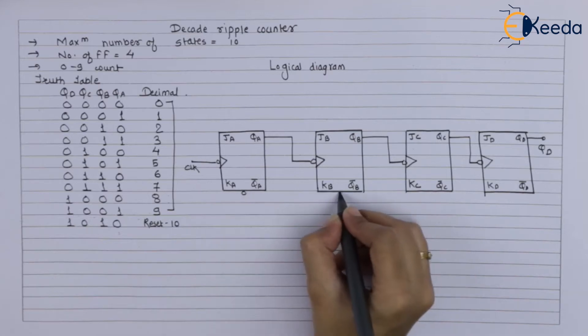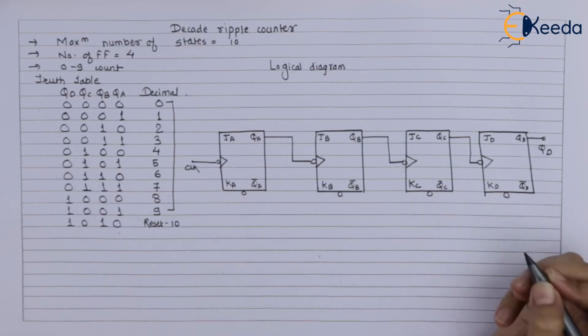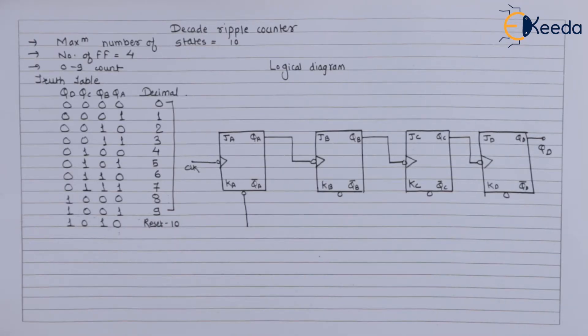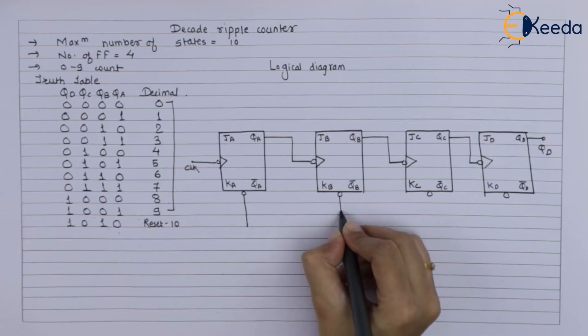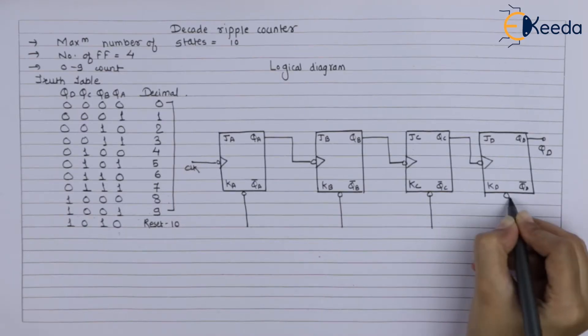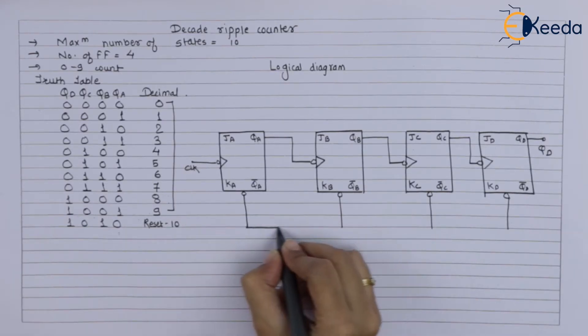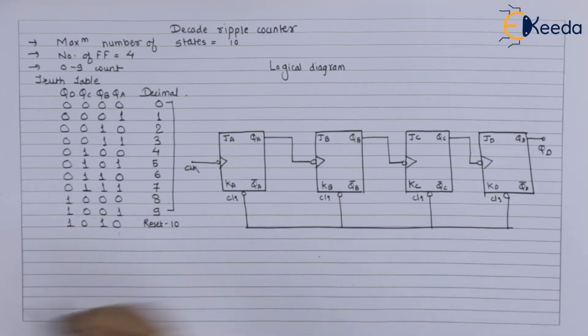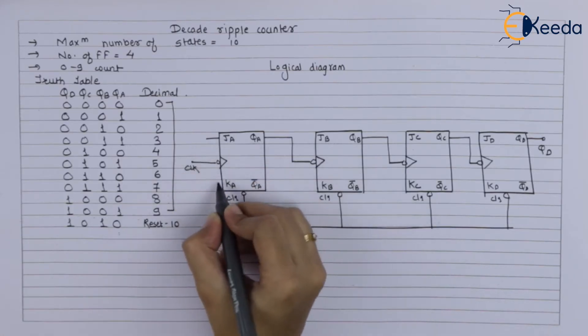Now we have to show the clear terminals by active low signal. Whenever clear is 0, then only it will activate. When it is 1, it will not operate. So we have taken common terminal. So we have shown here all the clear terminals by active low signals. After that, you have to